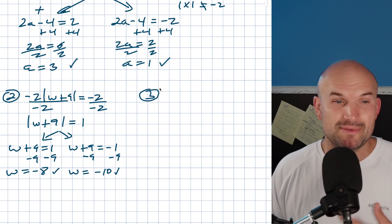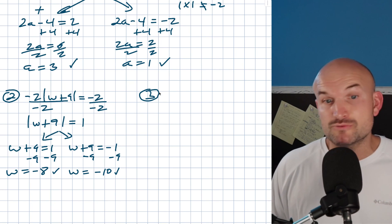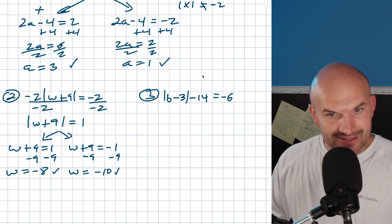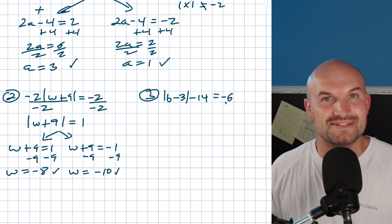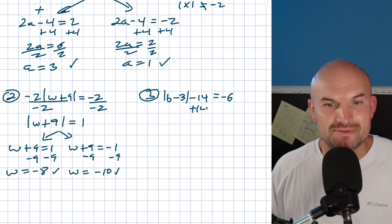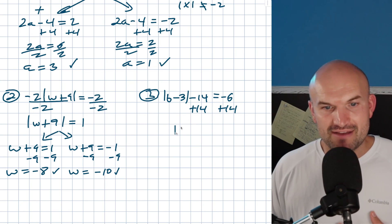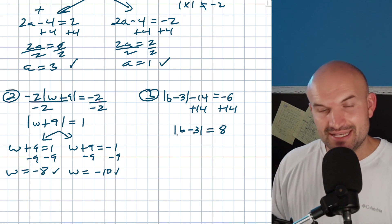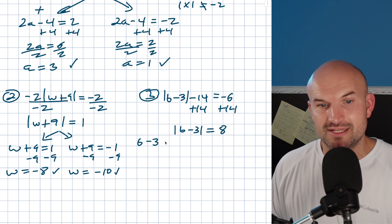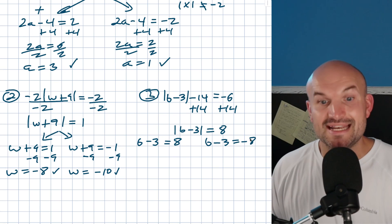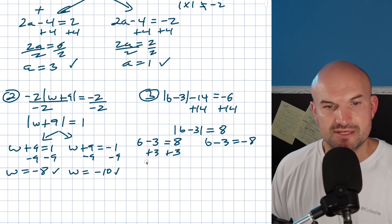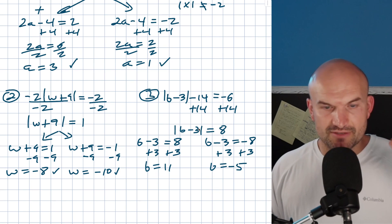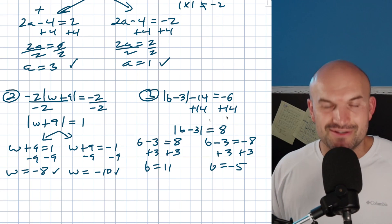What if we have addition or subtraction outside the absolute value? For example: the absolute value of b minus 3, minus 14, equals negative 6. Don't make the mistake of thinking there's no solution just because it equals negative 6 — when you isolate the absolute value by adding 14 to both sides, you get the absolute value of b minus 3 equals positive 8. Creating the two cases and solving: b equals 11, or b equals negative 5. Plugging back in confirms both work.